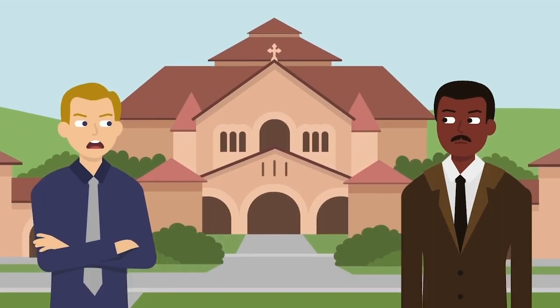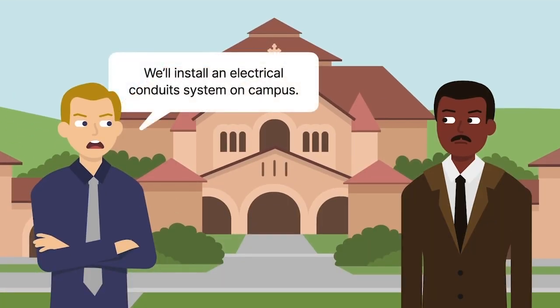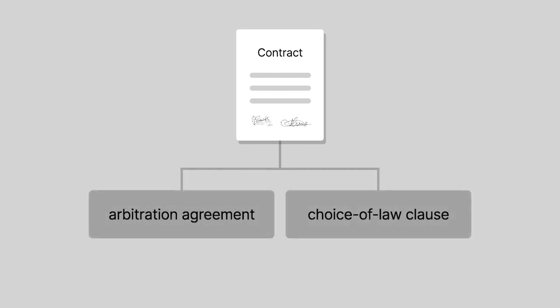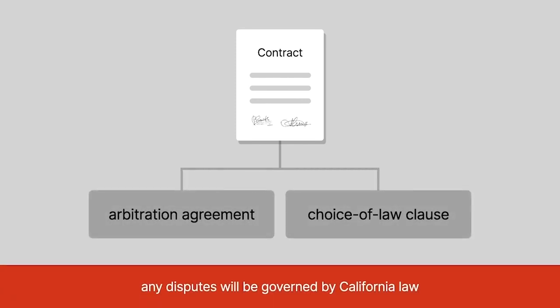Volt Information Sciences agreed to install a system of electrical conduits on the Stanford University campus. The party's contract contained both an arbitration agreement and a choice of law clause, providing that any disputes would be governed by California law.